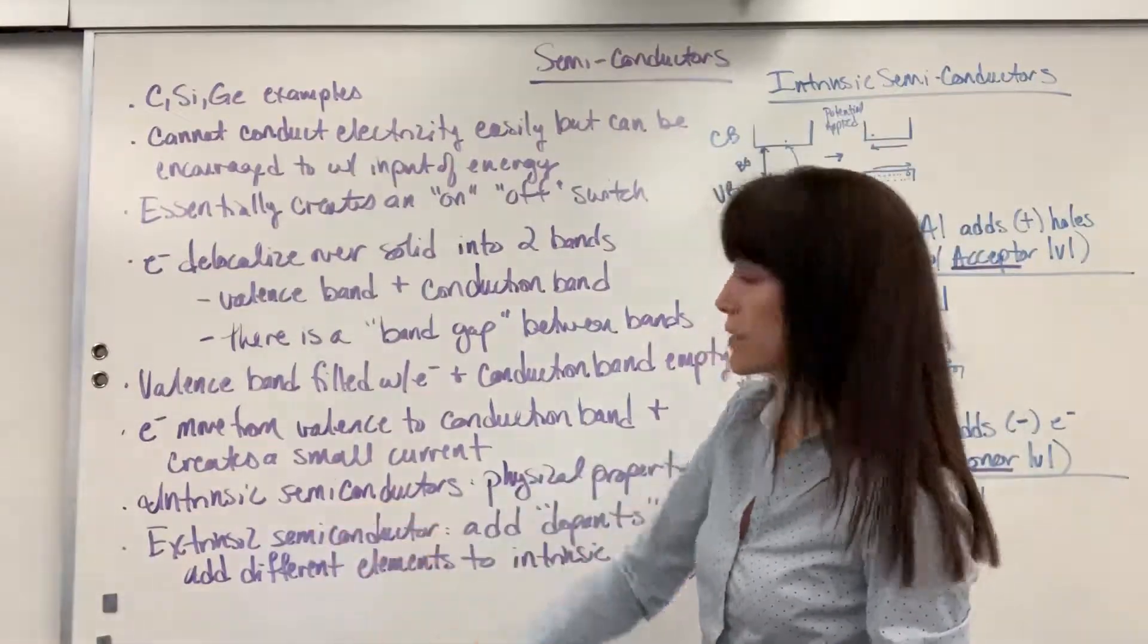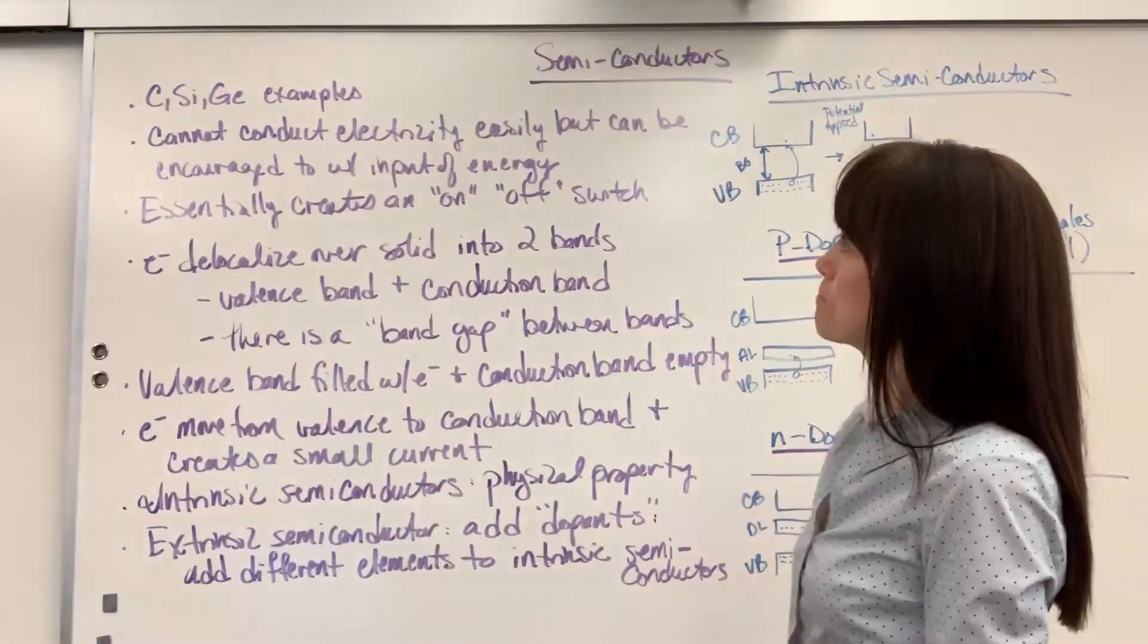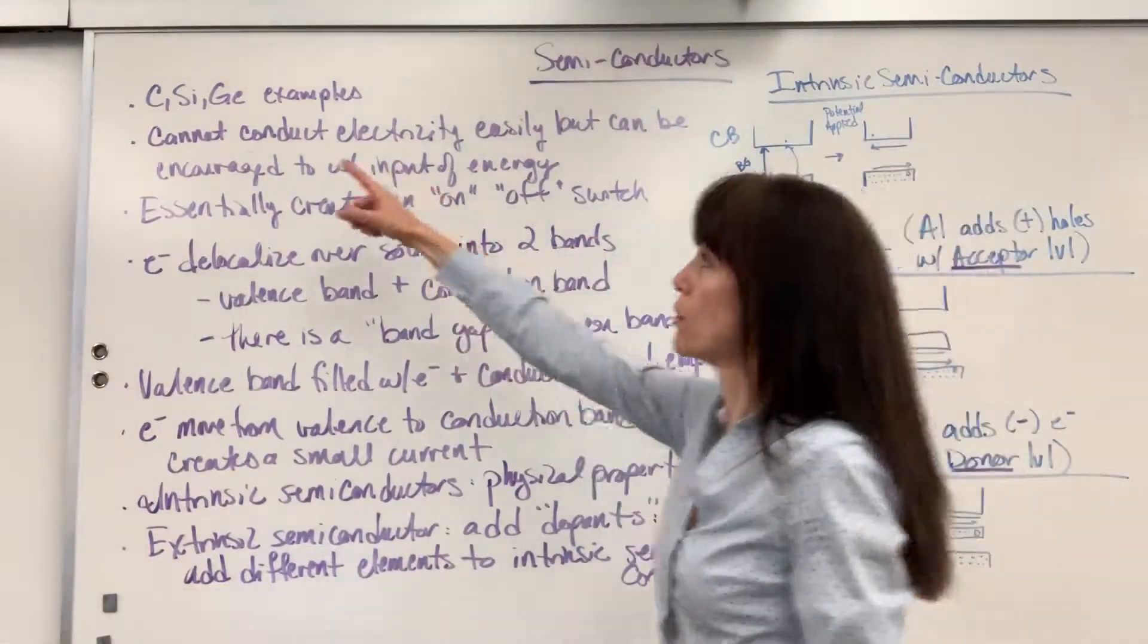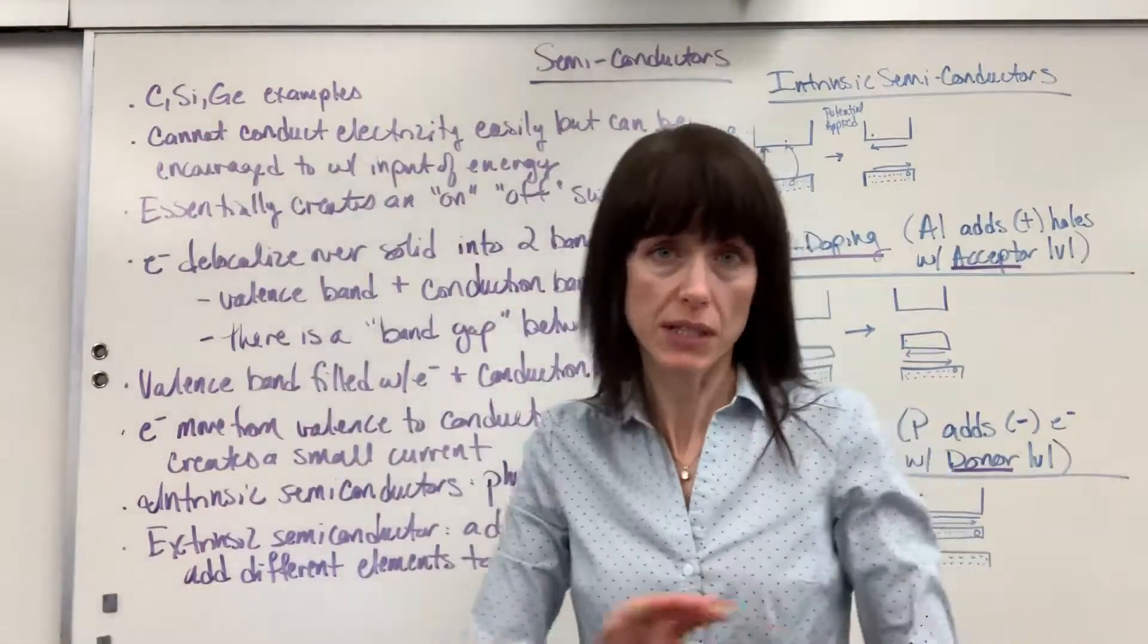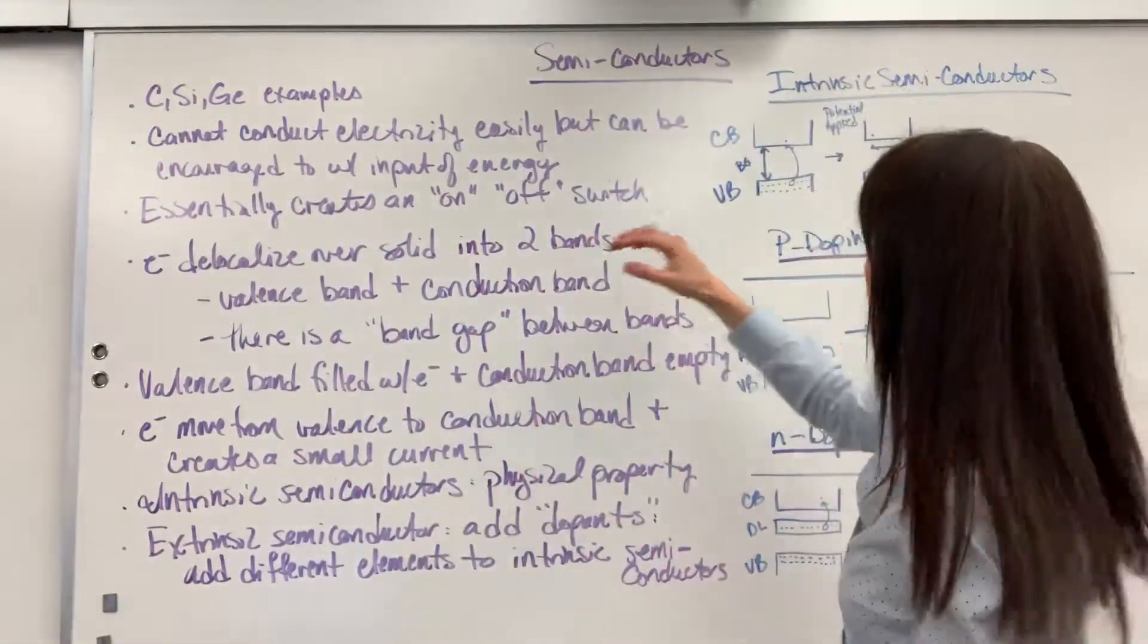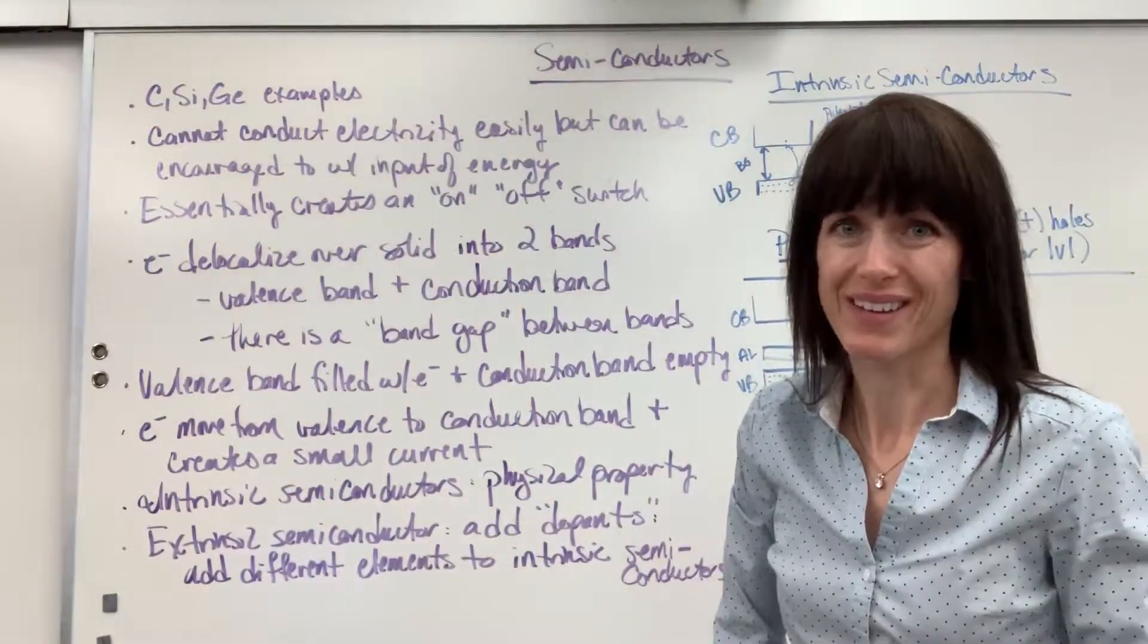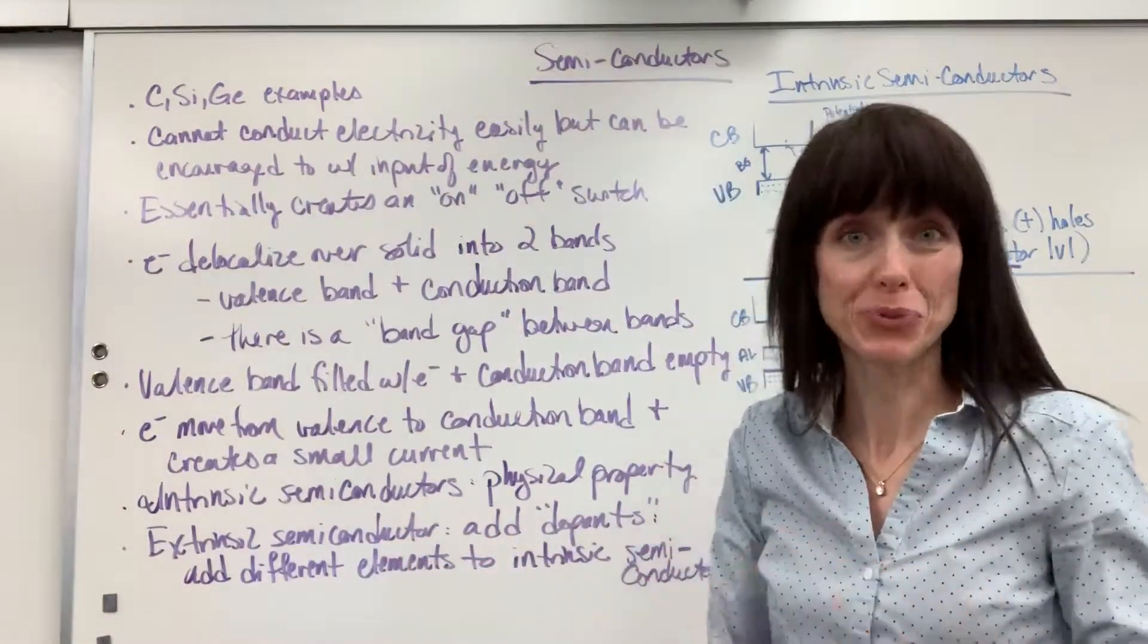Now, an intrinsic semiconductor, this is a physical property of the elements itself. So again, this would be like the carbon, the silicon germanium. This is just an intrinsic property that they have those delocalized electrons in the valence band, and they can move to the conduction band.